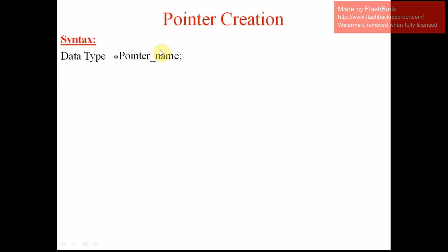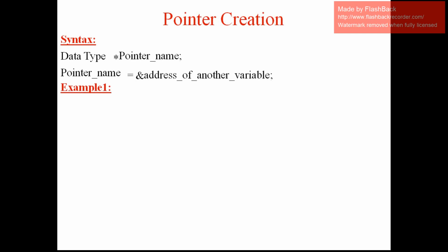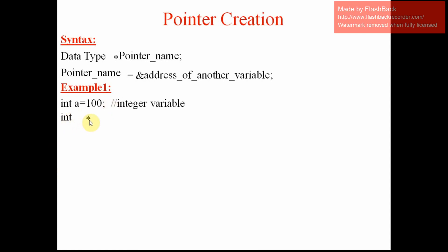After creating the pointer variable, to store the address of another variable we give: pointer name = &variable_name. Example one: first I am creating an integer variable 'a' with value 10. Now I want to store the address of 'a' into a pointer variable. So I give the data type int, then a space, then asterisk — because asterisk indicates a pointer — then the variable name 'b'. Now 'b' is the pointer variable which can store the address of another variable.